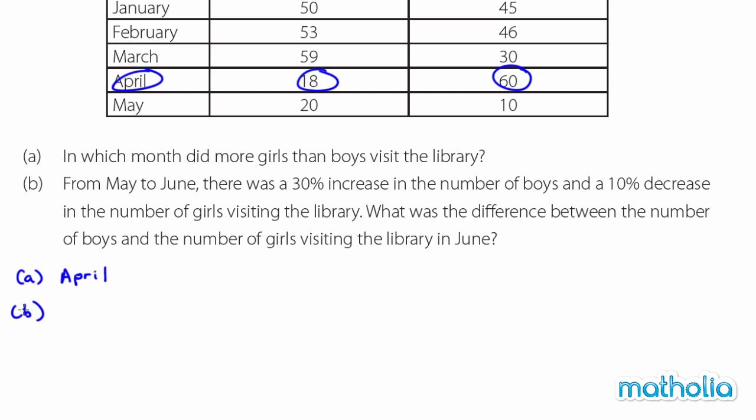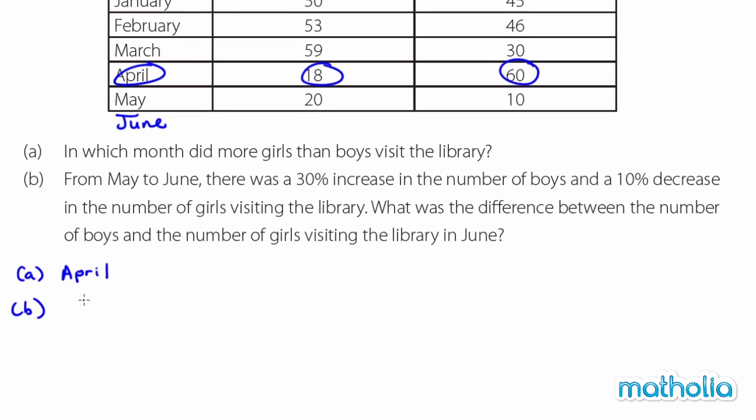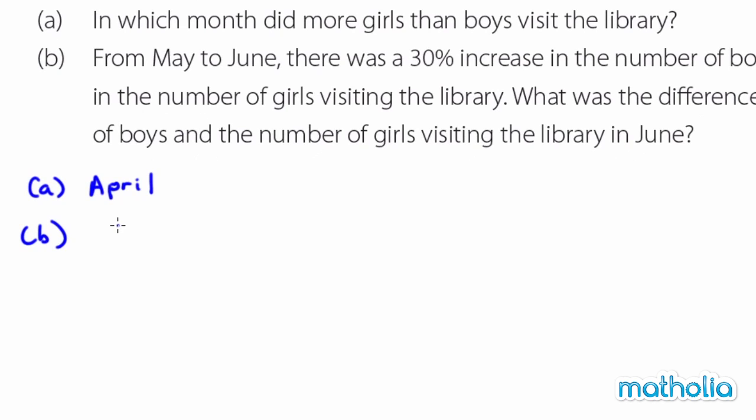For part B, from May to June — you see, June information is not given. There was a 30% increase in the number of boys and a 10% decrease in the number of girls visiting the library. Then they asked: what was the difference between the number of boys and the number of girls visiting the library in June?